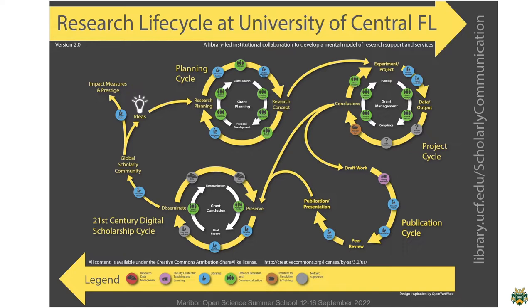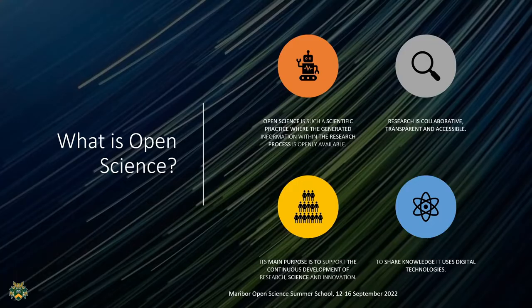In all of these aspects of these cycles, we can use open science workflows. So what is open science? Open science is a scientific practice — there are many different definitions — where the generated information within the research process is openly available. The research is collaborative, transparent, and accessible. Its main purpose is to support the continuous development of research, science, and innovation. To share knowledge, it uses digital technologies, which is really important in open science.